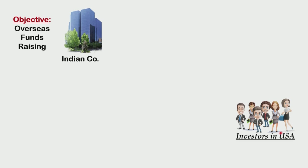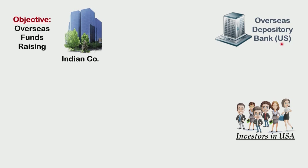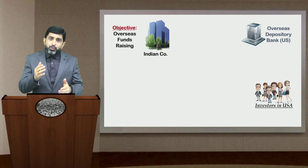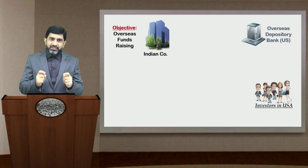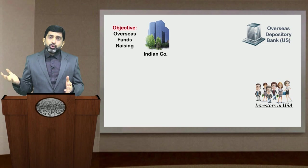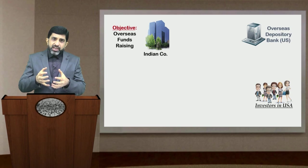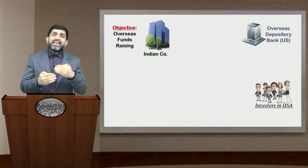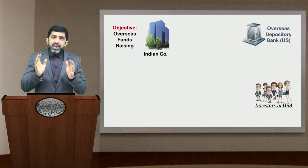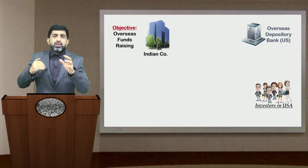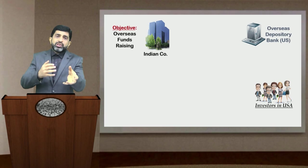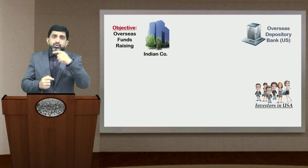The first intermediary involved between the Indian company and investors in the US is the Overseas Depository Bank located in the US. The term 'overseas' is used from the viewpoint of the Indian company. This bank plays a substantial role because it is going to issue ADRs. The Indian company issues shares to this depository bank, and on the backing of those shares, the bank issues certificates or receipts known as depository receipts. Practically, the shares lie with the depository bank and what goes into the hands of the investor is the depository receipt.